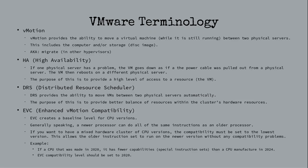Some of the VMware terminology we need to understand is vMotion. vMotion provides the ability to move a virtual machine while it's still running between two physical servers. This includes the compute and/or storage, such as the disk image. Other hypervisors call this migrate. So we're going to take a virtual machine that's up and running on host A and vMotion it to a new host, let's say host C. That VM will remain up the entire time. You can run a ping test while the migration is happening — you shouldn't lose much, maybe a couple of pings, but that's totally normal depending on your application environment.